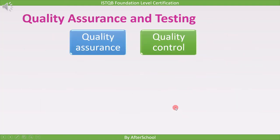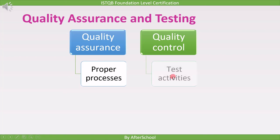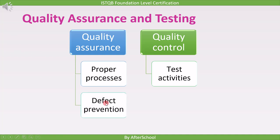Let's look into quality assurance and quality control a little more. Quality assurance contains proper processes, while quality control has test activities. Quality control is practical, whereas quality assurance is theoretical. Quality assurance is more about defect prevention — by laying out guidelines and documents, it helps prevent defects. Quality control is a defect detection mechanism.